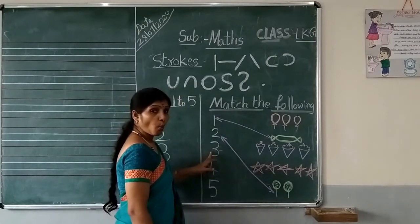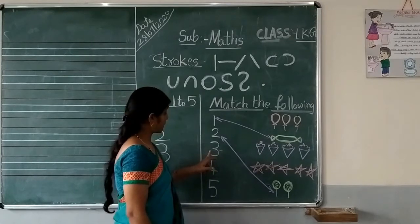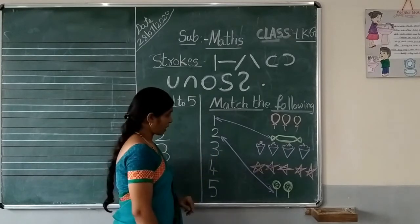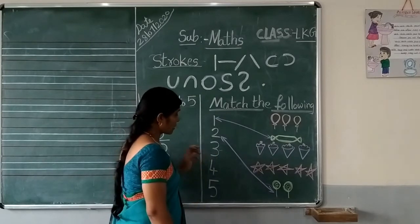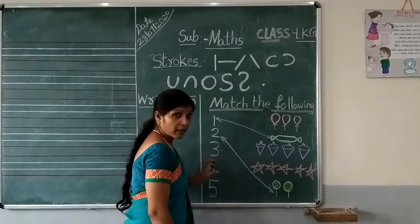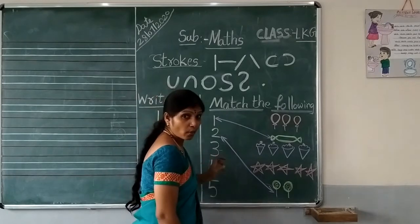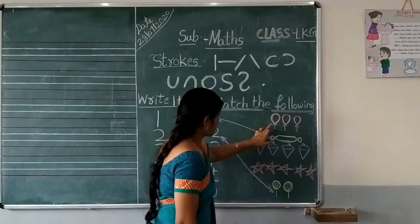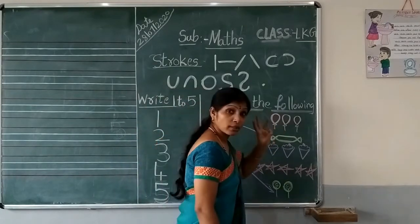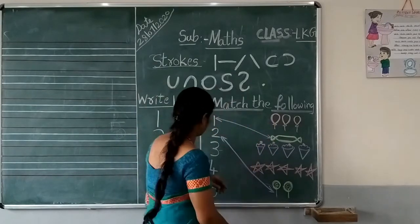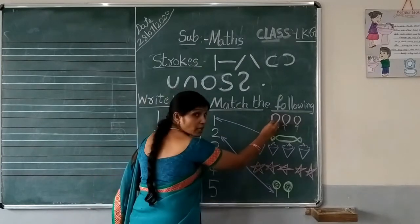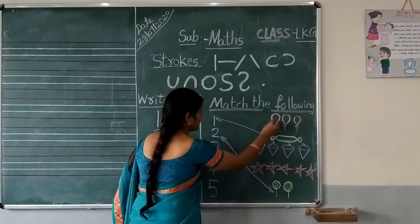Yes, here. How many objects we need? 3 objects. Come on children, let's find out where the 3 objects are. Yes, here we have 3. Come on children, let's match to number 3.